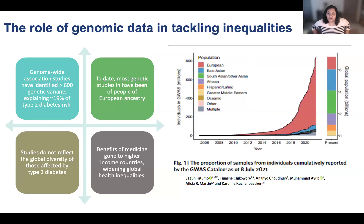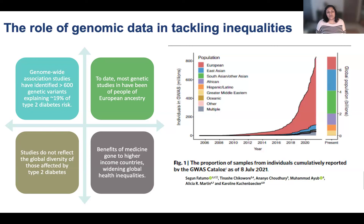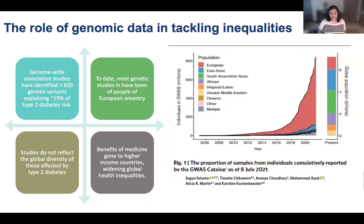With the explosion of genomic data, we are making good use of these to understand the pathophysiology of diabetes in different populations in even greater depth. Over 600 genome-wide association studies have identified genetic variants explaining 19% of diabetes risk. However, due to the lack of diversity mentioned before, the benefits of these findings have so far largely gone to higher-income countries, thus widening global health inequalities.